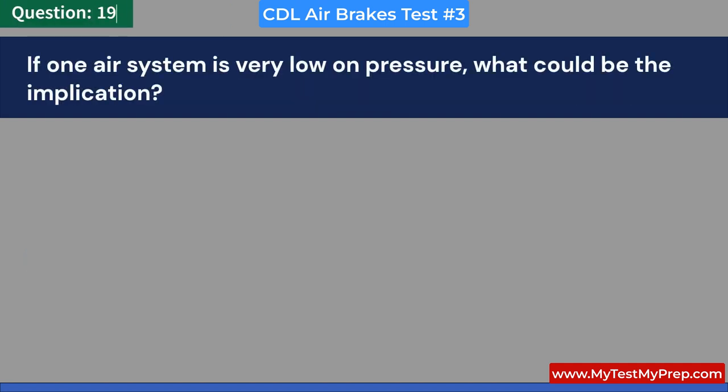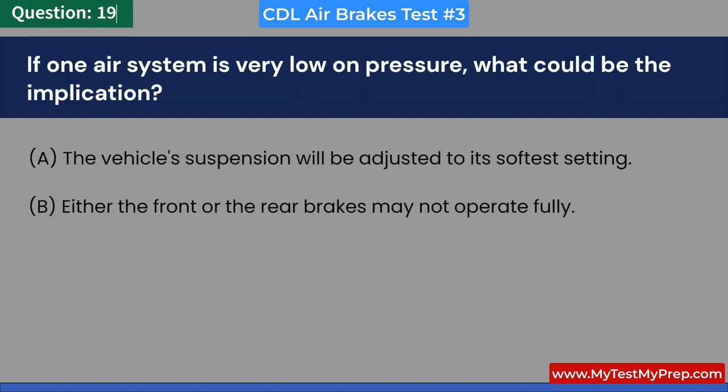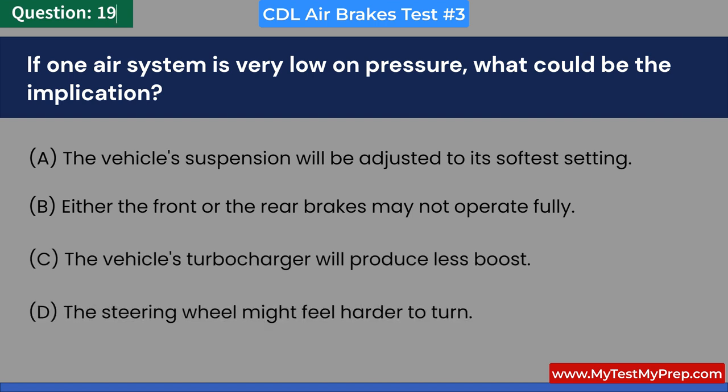If one air system is very low on pressure, what could be the implication? A. The vehicle's suspension will be adjusted to its softest setting. B. Either the front or the rear brakes may not operate fully. C. The vehicle's turbocharger will produce less boost. D. The steering wheel might feel harder to turn. Answer: B. Either the front or the rear brakes may not operate fully.